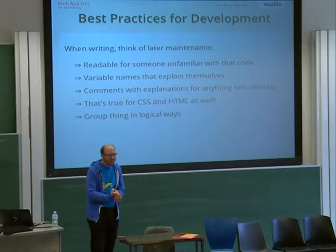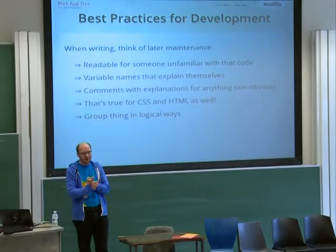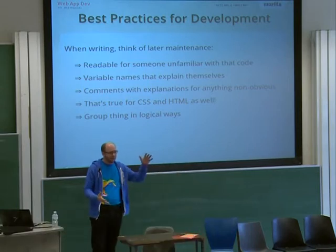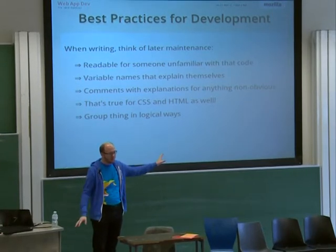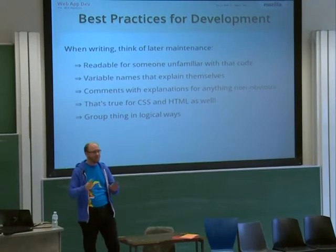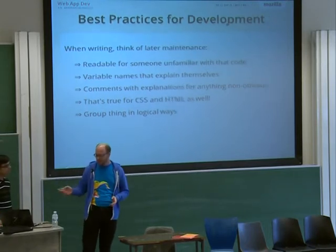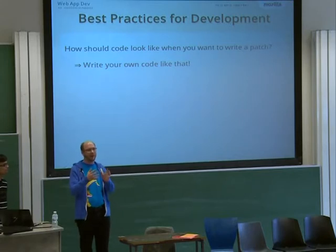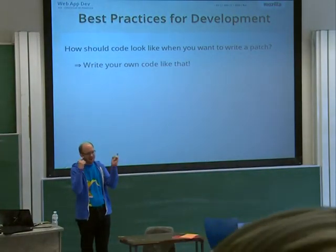Having a CSS class somewhere where nobody knows what it's needed for is not helpful, so use comments there as well. Also use grouping, especially in CSS — group things together that logically fit together. It doesn't make sense to have things that belong together spread across your files. Just make sure you have one logic and stick to it. To summarize: think of how code should look if you want to contribute to a project and write a patch. What you'd expect to find there to navigate and write a patch — that's exactly how you should write your own code.